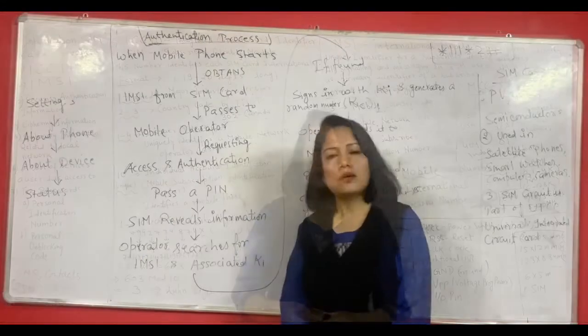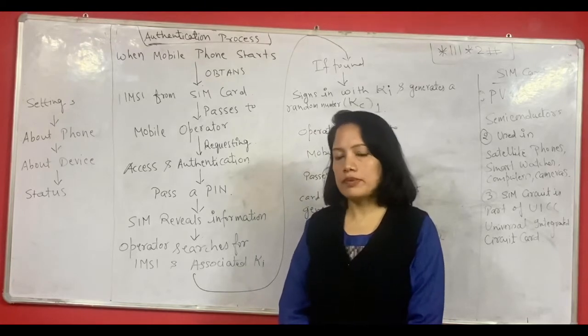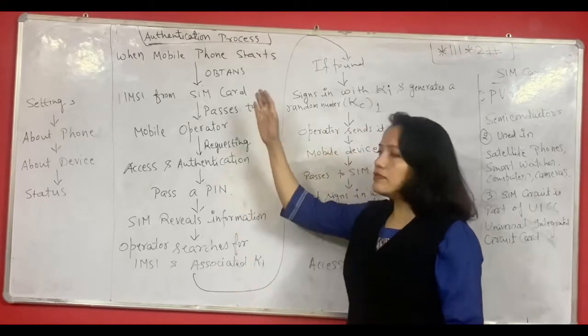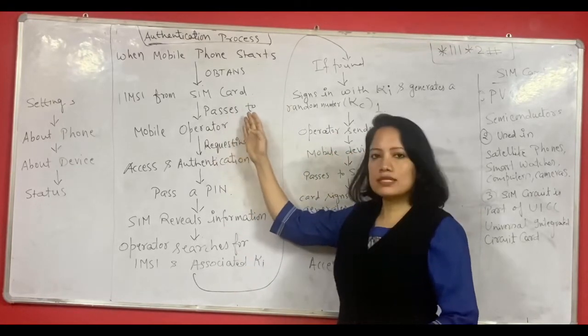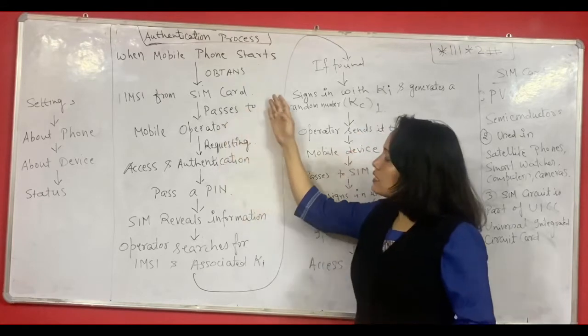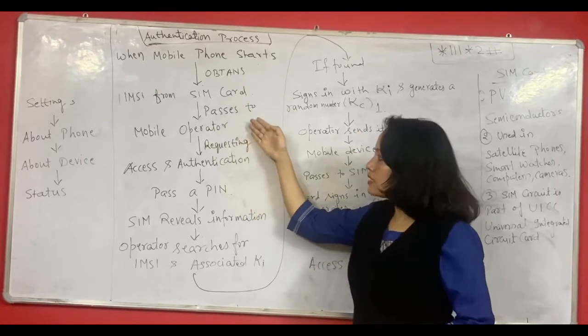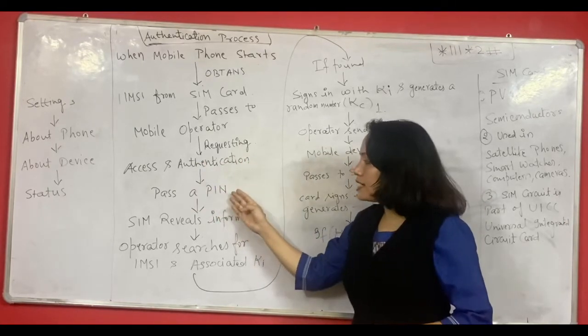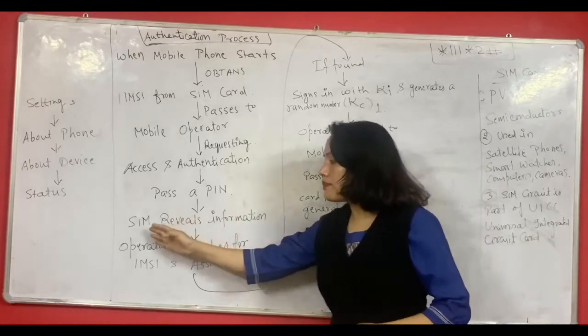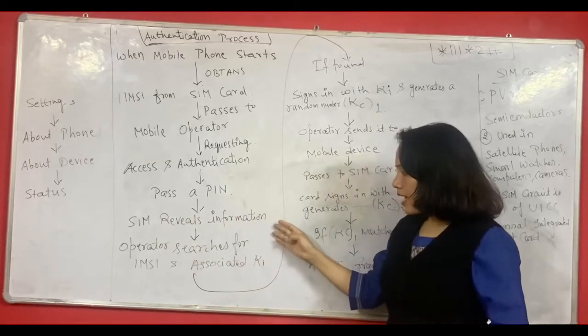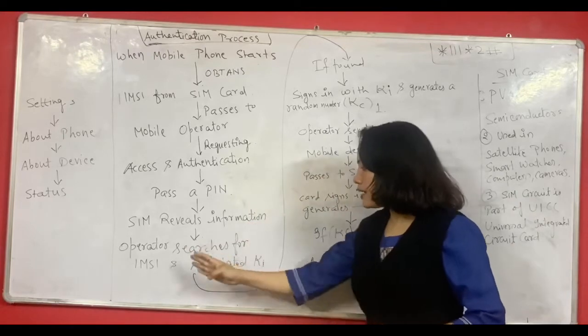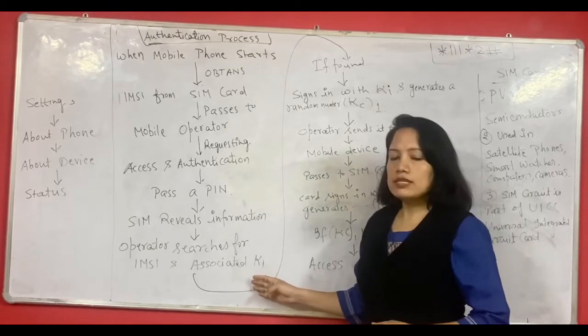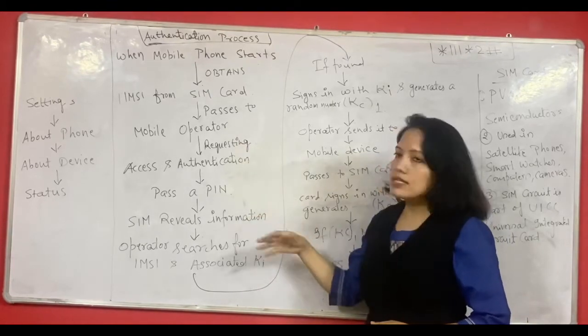So I hope this information is useful. Whenever a mobile phone starts, then what happens? So now I am going to talk about the authentication process. When a mobile phone starts, it obtains IMSI number from the SIM card. Then that information is passed on to the mobile operator, requesting access and authentication. For that a personal identification number is passed. Then what happens? The SIM card reveals the information. And then the operator searches for IMSI and associated key, which is the authentication key, which is very important in starting your mobile phone.